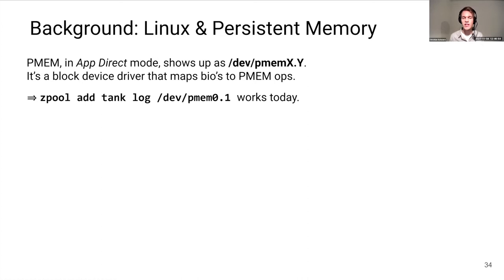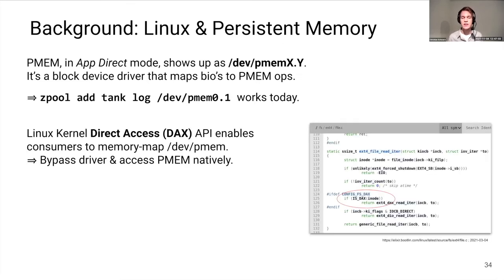But the idea behind PMEM is really about direct byte-granular and transparent access to persistent storage — a full bypass of the OS storage stack. To support this, Linux provides the direct access (DAX) APIs. Block device consumers can use these APIs to check whether the block device is actually PMEM, and if so, establish a direct memory mapping. Once the mapping is established, they can issue load/store instructions and cache flushes directly to that mapping, with the OS completely out of the picture.